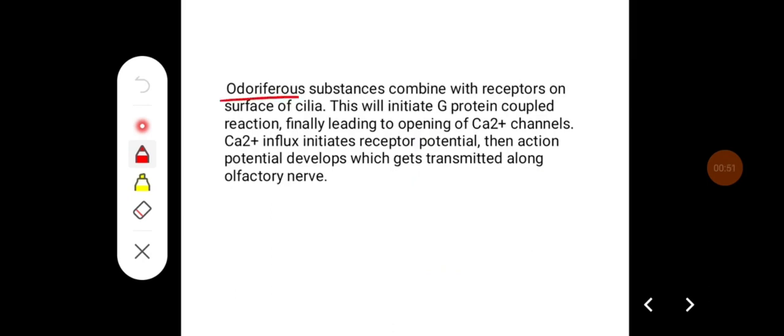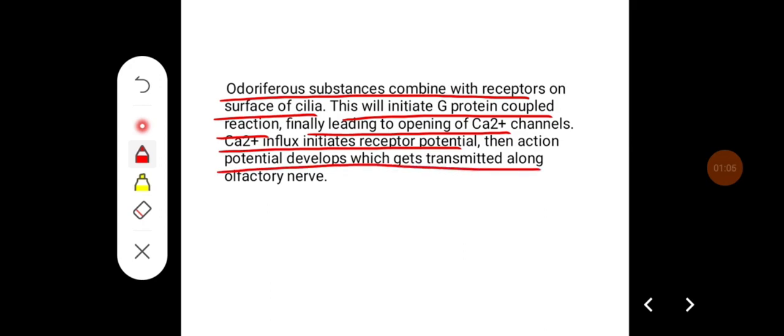The odoriferous substances combine with these receptors on the surface of cilia. This will initiate G-protein coupled reactions and finally leading to opening of calcium channels. Calcium influx initiates receptor potential, then action potential develops which gets transmitted along olfactory nerve.